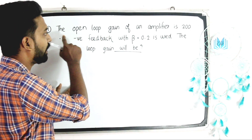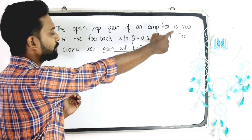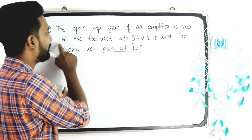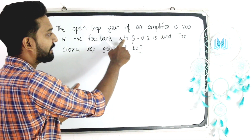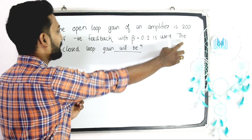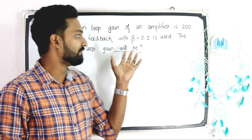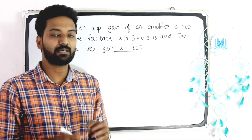Question 1: The open loop gain of an amplifier is 200. If negative feedback with beta equal to 0.2 is used, the closed loop gain will be?